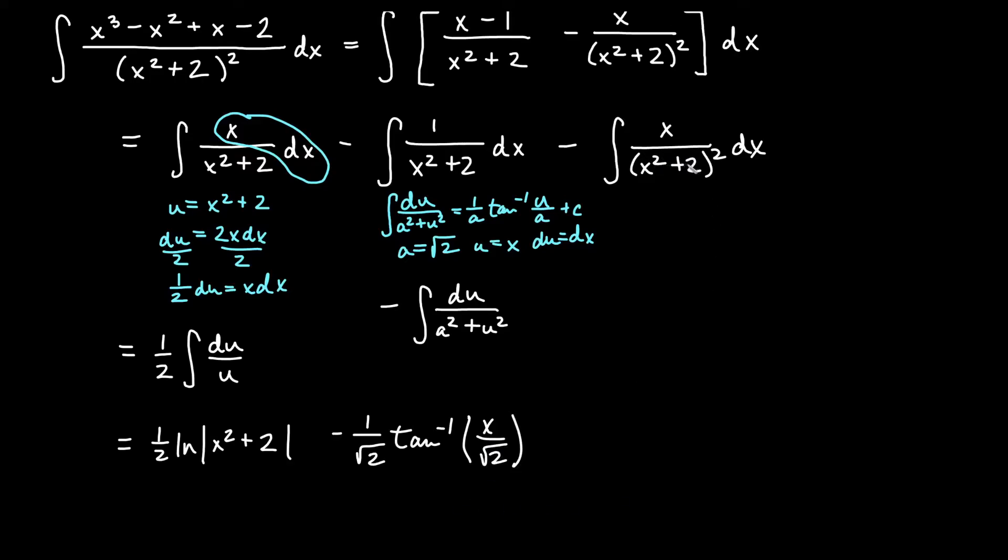For this one, again if I choose u = x² + 2, I get a similar du situation on top to the first one but we will just have a square on the bottom. So u = x² + 2 and then du is 2x dx. Again dividing both sides by 2, I'll get 1/2 du = x dx, and then I can just replace the x dx directly.